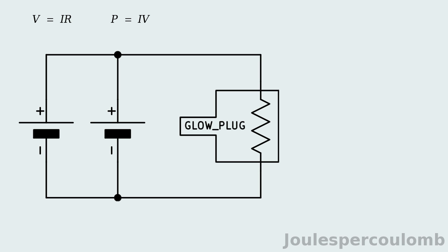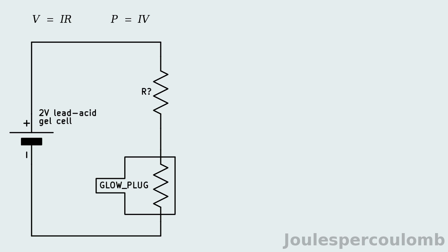The question is whether a two-volt lead-acid gel cell could be used instead. The inquirer has tried connecting several of his glow plugs directly across this cell, and found that they ran too hot, and one even burnt out. Could a series resistor be added to limit the power output of the glow plug, and if so, what type of resistor would be required?